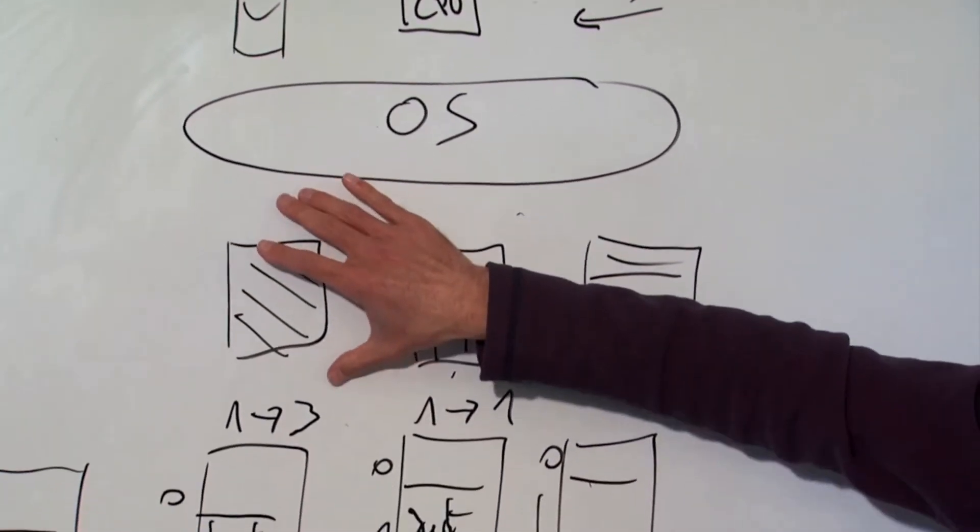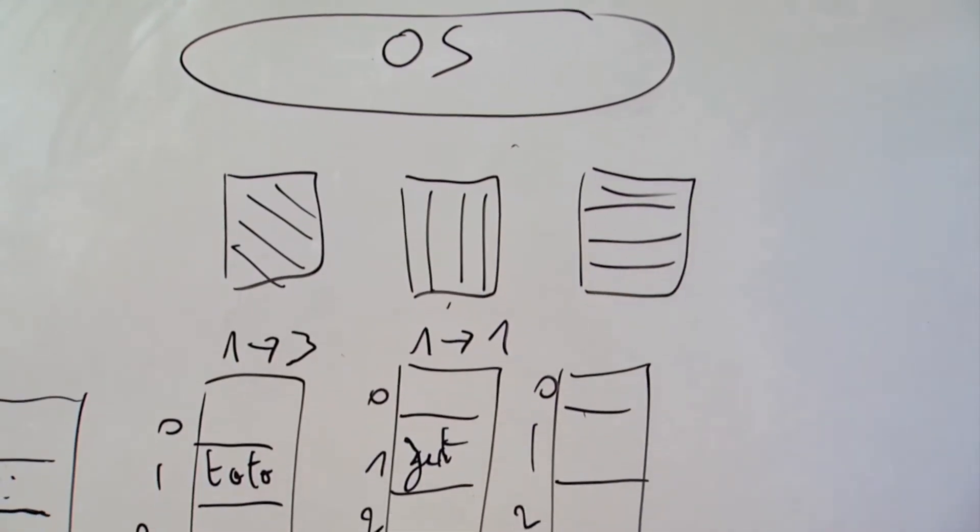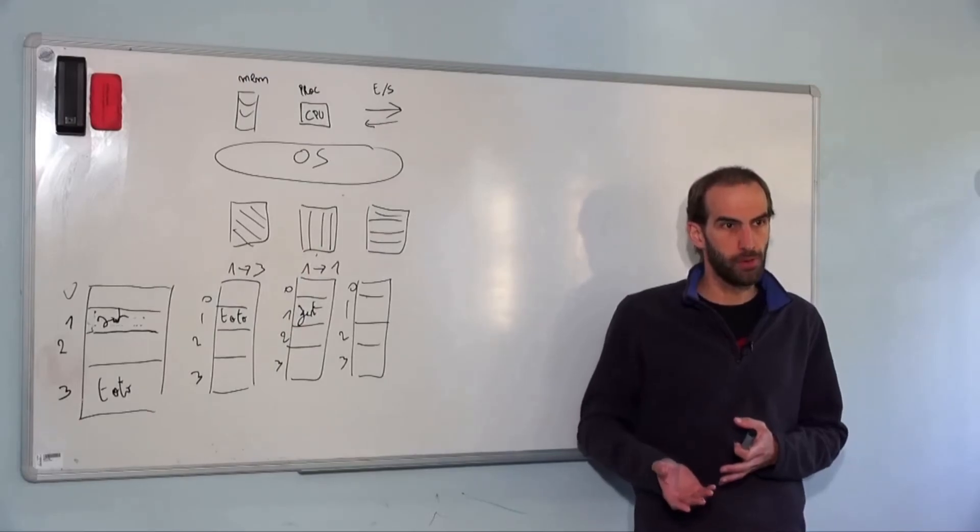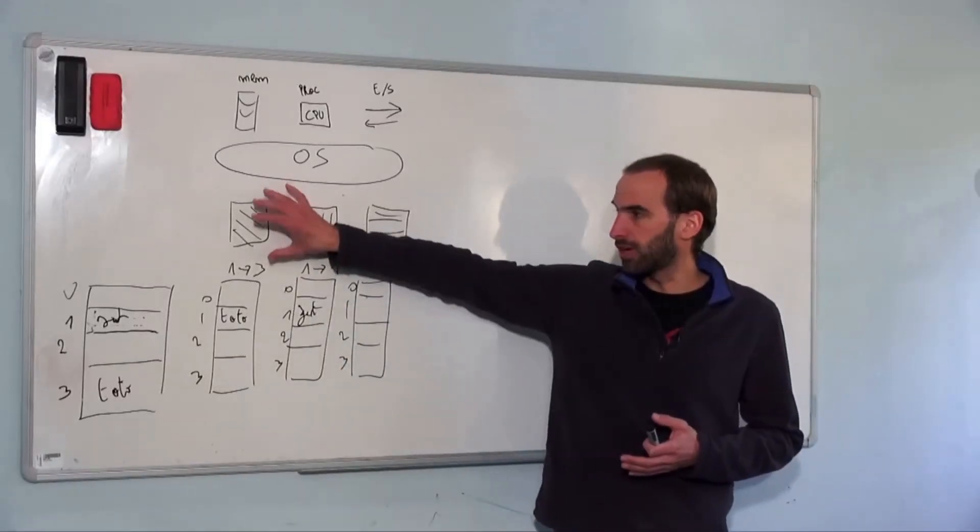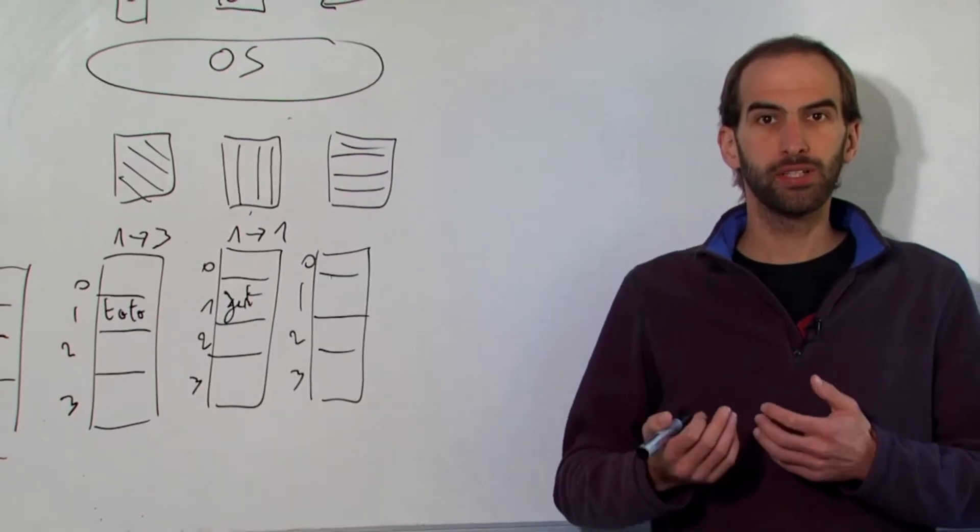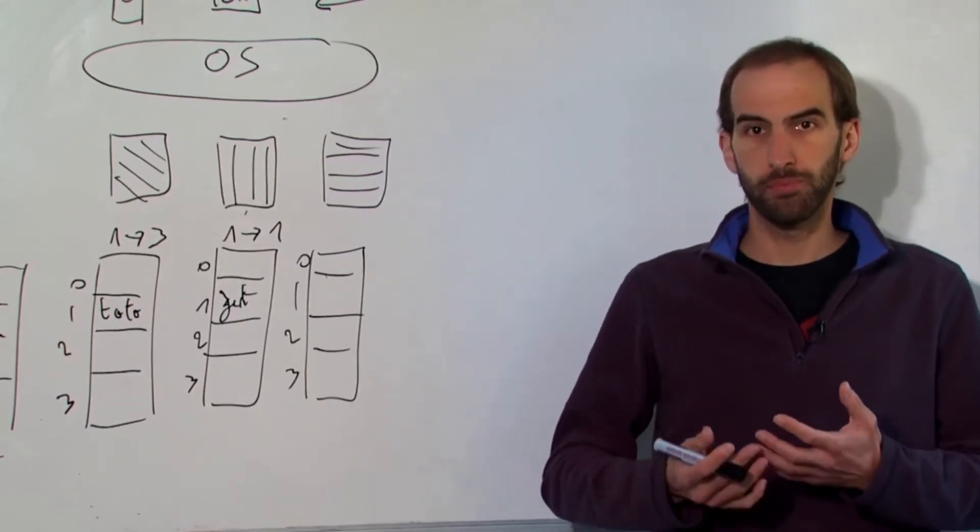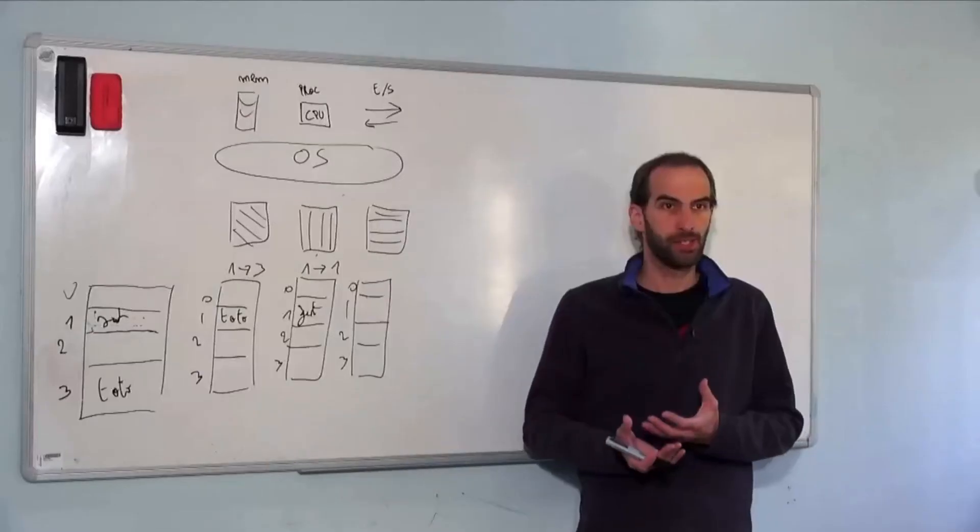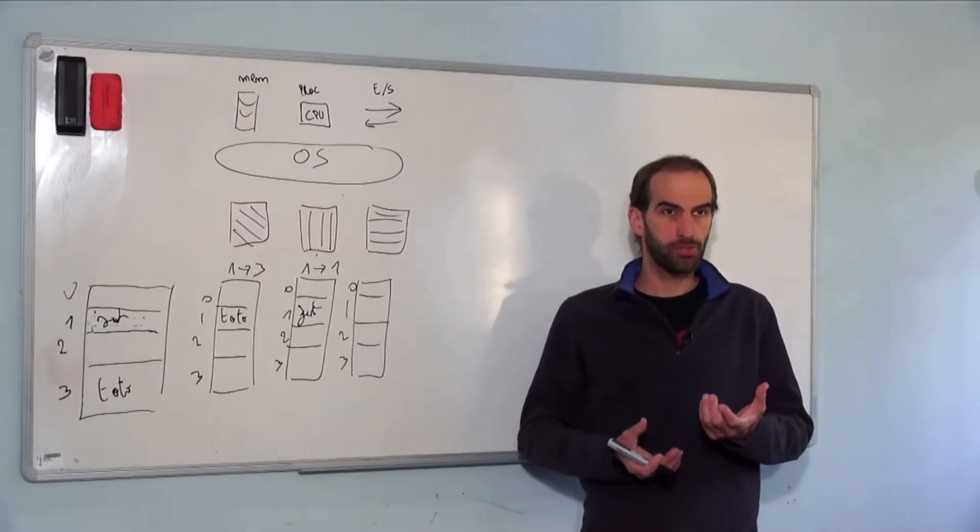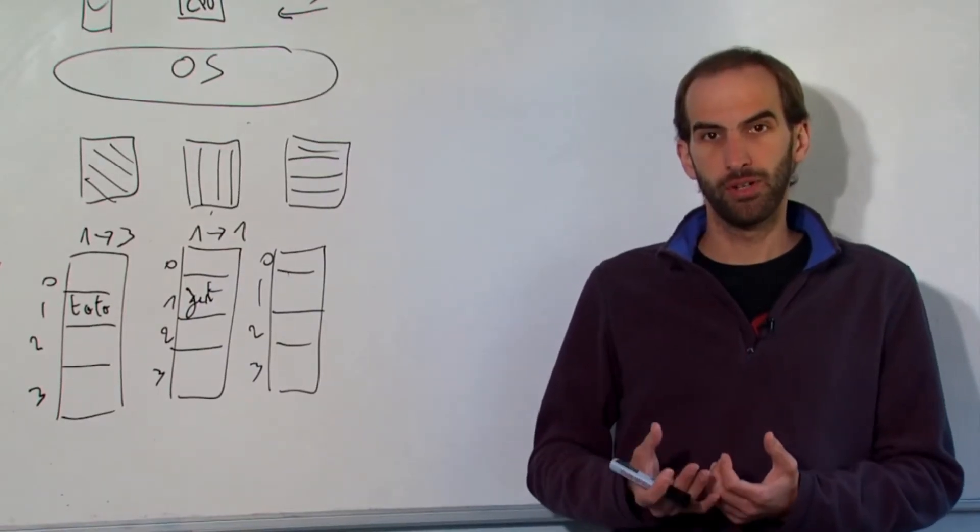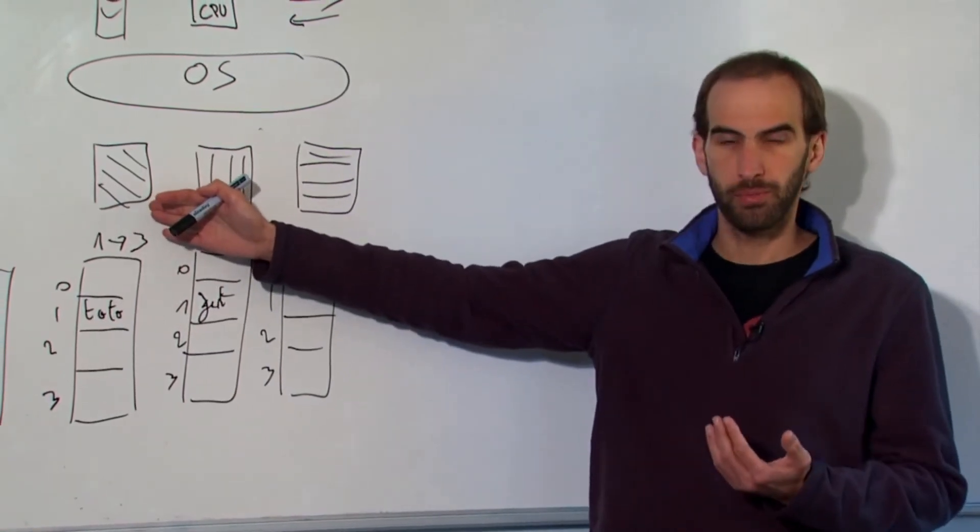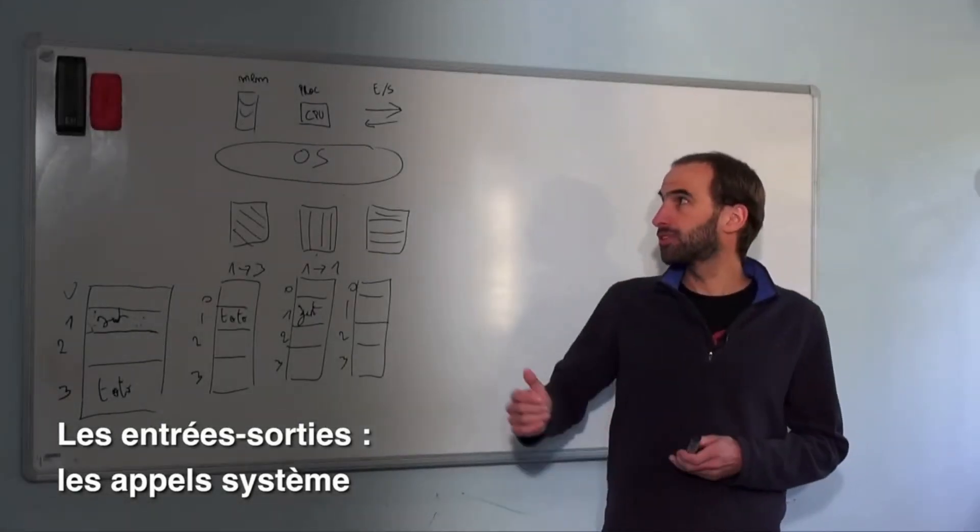But the operating system will do the same thing through scheduling. Scheduling will say that application has done enough calculations on the processor for now, so I'm going to put it on break to allow other applications to use the processor. What can also happen is that maybe this application does a calculation, and then at a certain point, it has to read the hard drive. The hard drive is much slower than the processor, so the app will have to wait for the data. So it's going to retrieve the data on the hard drive, and during that time it stays on pause, which frees the processor for another application. Once that is done and the data has been retrieved, it will be able to go back to the processor. So with that, we have the first two elements.